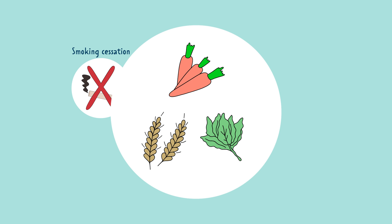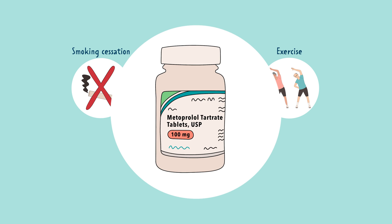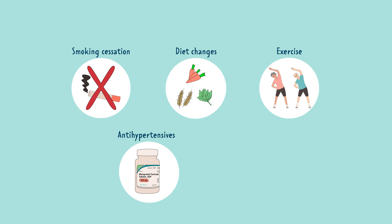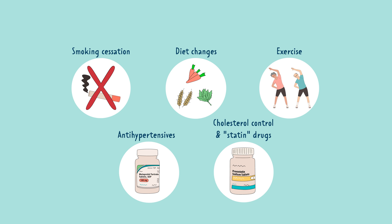Prevention of an MI is key because we want to do everything in our power to prevent a heart attack. Some modifiable factors — ones that can be controlled — include educating your patient to stop smoking, making diet changes like lower fat and lower sodium, and encouraging exercise. You also want to educate patients with high blood pressure to take their anti-hypertensive medications regularly. And for those patients with high cholesterol, encourage them to take their anti-hyperlipidemic medications regularly — typically your statins. We want to prevent cholesterol from forming fatty plaque buildups in the vessels. All these things can help prevent a heart attack.